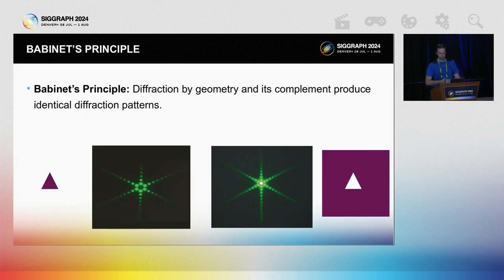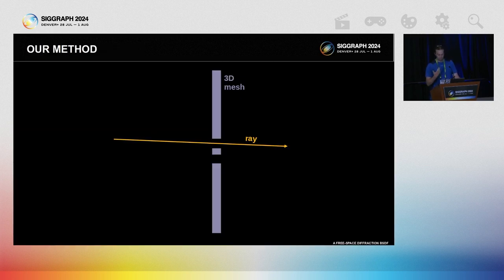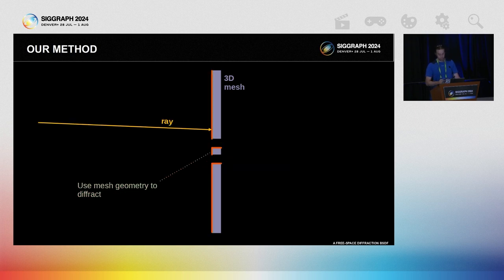We will use something known as Babinet's principle, a piece of electromagnetic theory. Babinet's principle states that the diffraction induced by a geometric aperture is identical to the diffraction induced by the geometric complement to said aperture. What this means for us is that instead of finding a mechanism to predict when a ray of light passes next to an object and quantifying the geometry of the opening — all of which is very cumbersome — instead we will diffract rays that impinge directly upon the object and use a geometric mesh as the diffracting aperture. That geometric mesh is the projected geometric complement, therefore the diffraction produced by this mesh is identical to the diffraction that would have been produced by the opening.